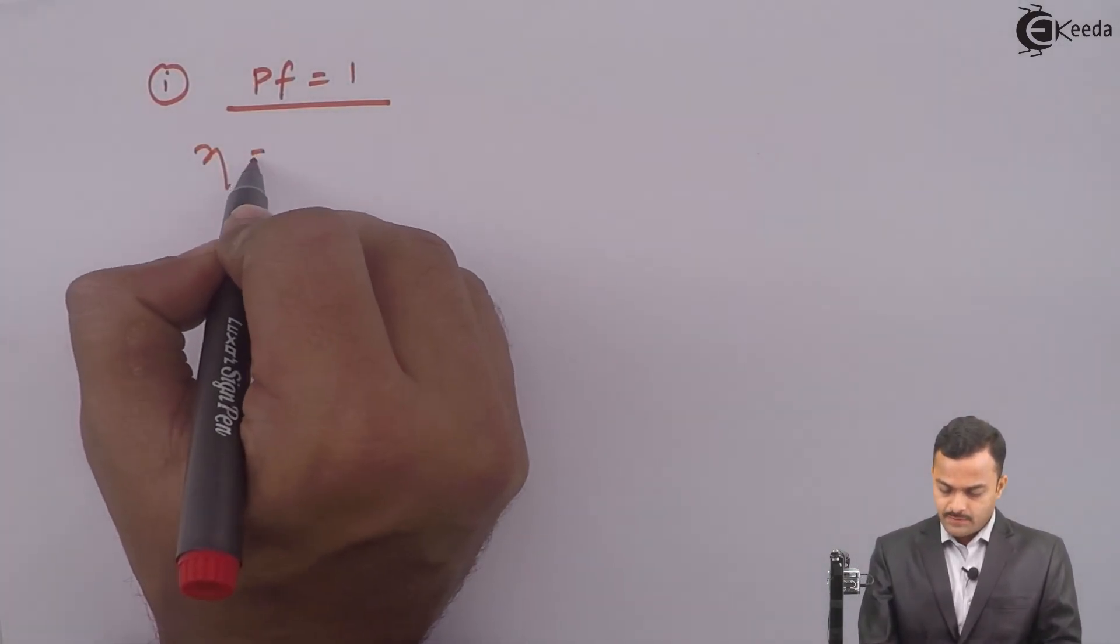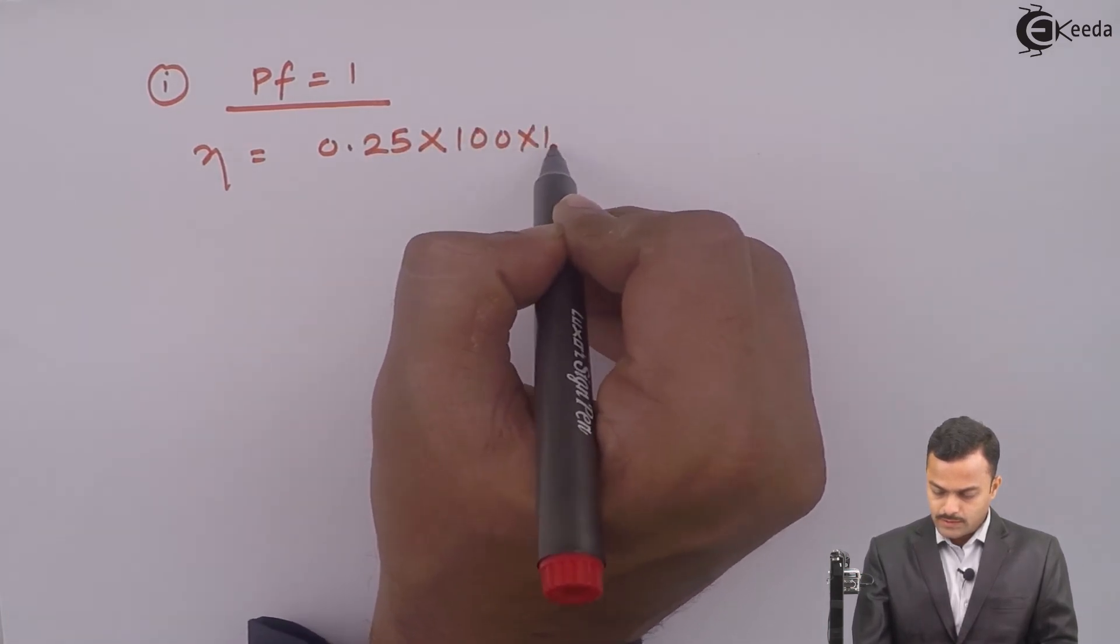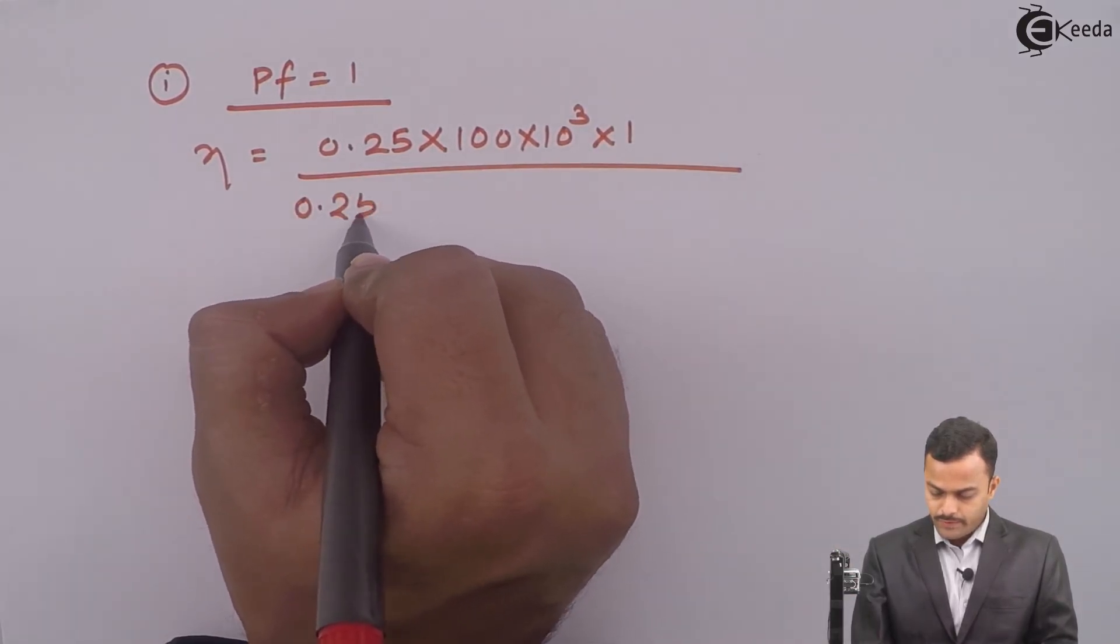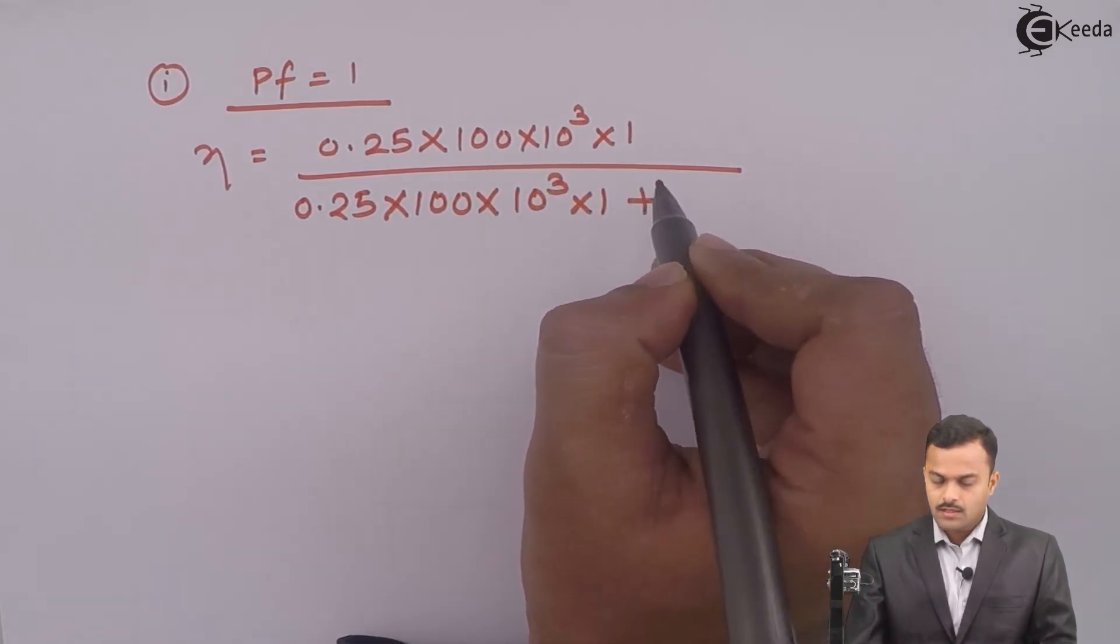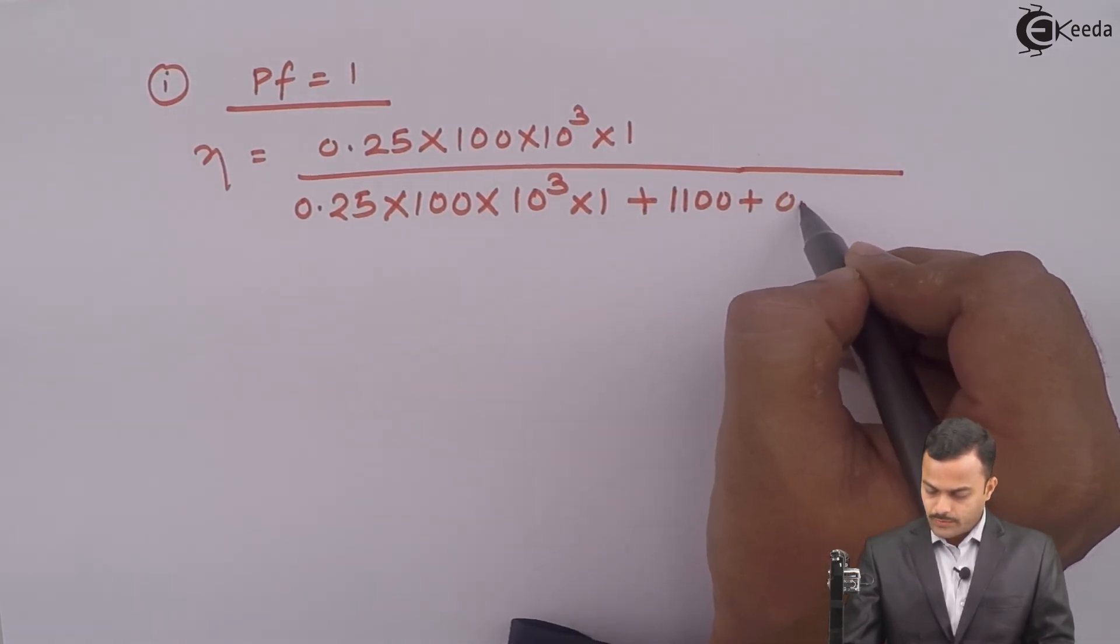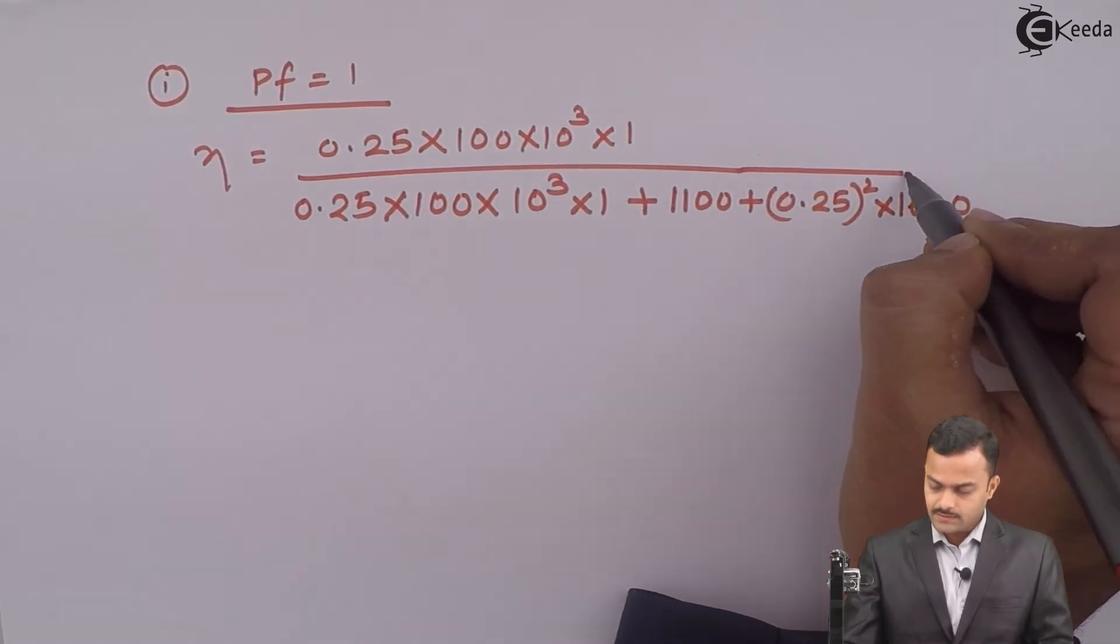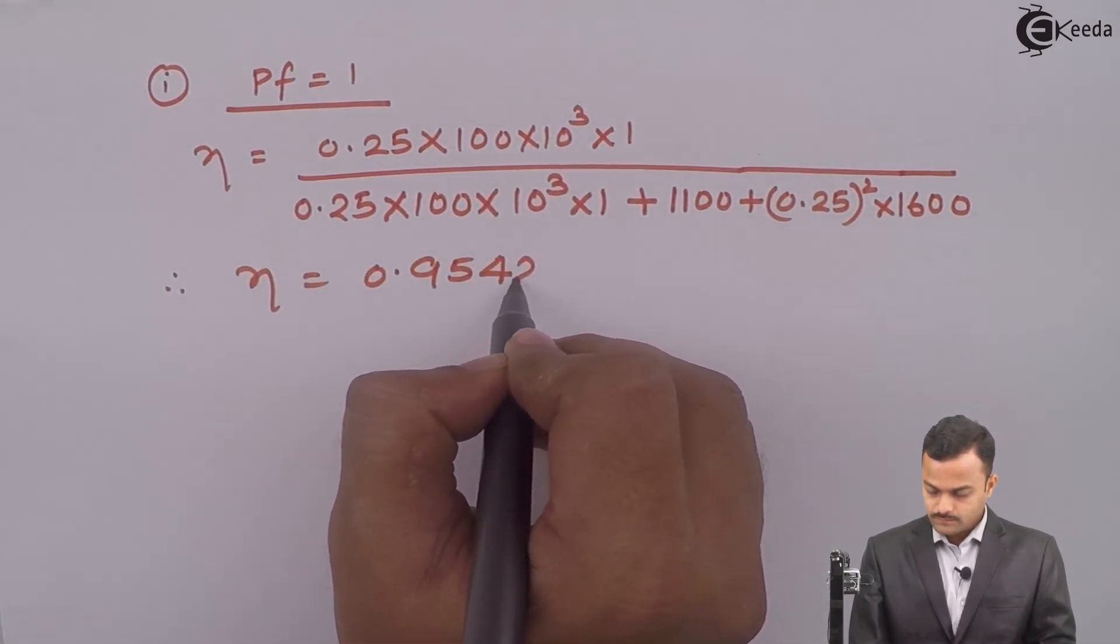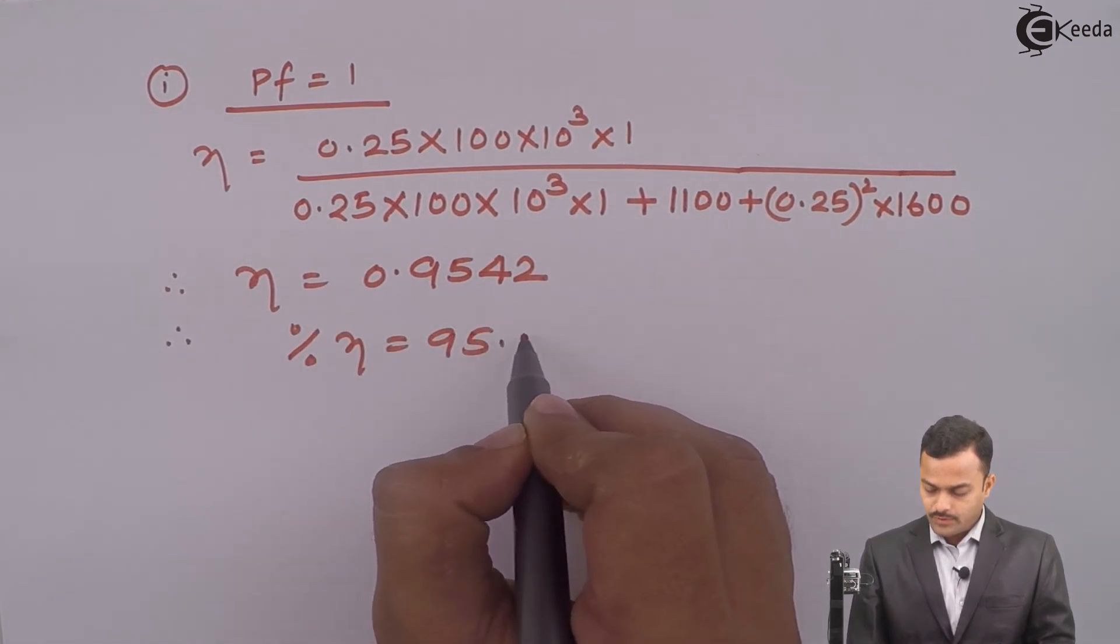So efficiency will be 0.25 multiplied by 100 into 10³ times power factor unity upon 0.25 multiplied by 100 into 10³ multiplied by 1 plus iron loss 1,100 plus 0.25² into WCUFL 1,600. So if you solve, you will get efficiency equal to 0.9542. In percentage, it is 95.42%.